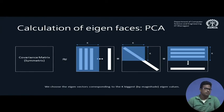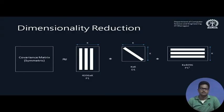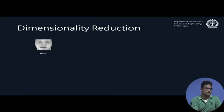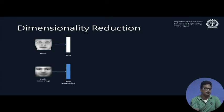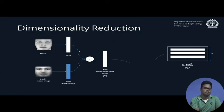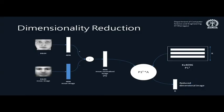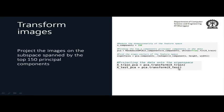Once we have identified the principal components, we perform dimensionality reduction, preserving just the first k principal components. The dimensionality is now 4096×k. To reduce a given input image, we mean-normalize it using the previously calculated mean image, then transform it with P1ᵀ: multiplying P1ᵀ by the mean-normalized image gives a k-dimensional vector representing the image in the reduced space spanned by the top k eigenvectors. PCA.transform applied to a set of input vectors does this transformation automatically.